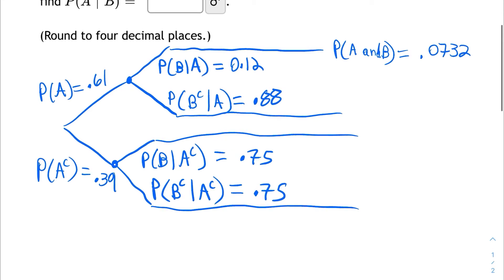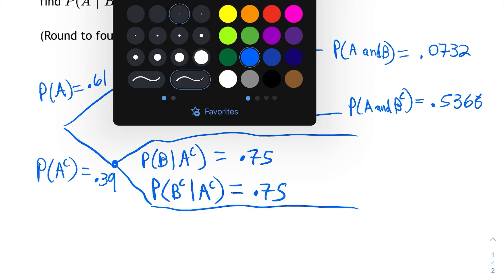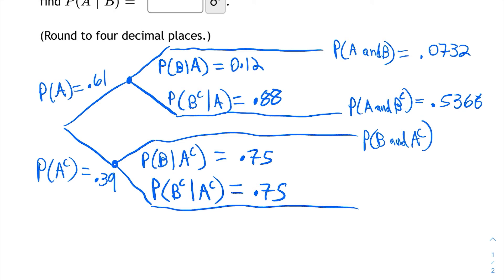So that's the joint probability of A and B. The next joint probability is going to be the probability of A and B's complement. That's the probability of A times the probability of B's complement given that A has already occurred: 0.88 times 0.61 is 0.5368. Then next, I'm going to find the joint probability of B and A's complement. That's the probability of A's complement times the probability of B given A's complement has already occurred: 0.39 times 0.75, which is 0.2925.